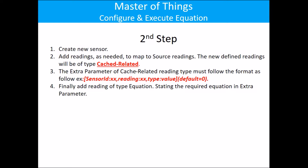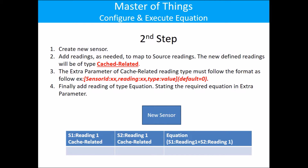Finally, for the new sensor, I will add a reading of type equation, stating the required equations. So the new sensor has the first reading mapped to sensor 1, a second reading mapped to sensor 2, and an equation reading which has a simple equation calculating the addition of those two readings.